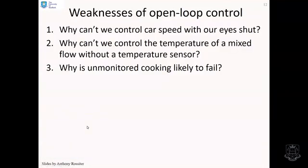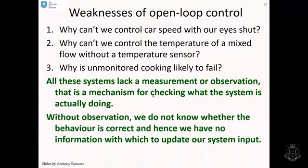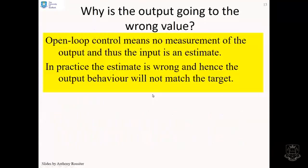OK, so what's the weaknesses of open-loop control? Why can't we control car speed with our eyes shut? Why can't we control the temperature of a mixed flow without a temperature sensor? Why is unmonitored cooking likely to fail? All of these systems lack a measurement or observation. That is a mechanism for checking what the system is actually doing. And without observation, we do not know whether the behaviour is correct. And hence, we've got no information with which to update our system input.